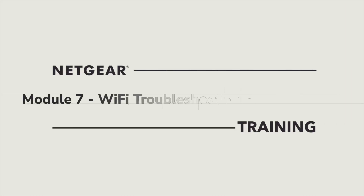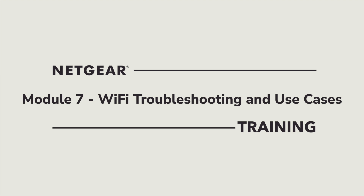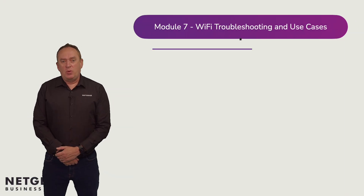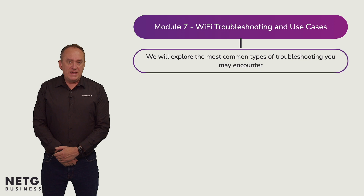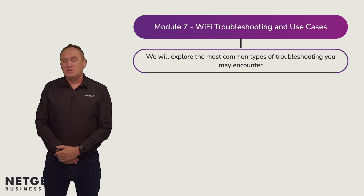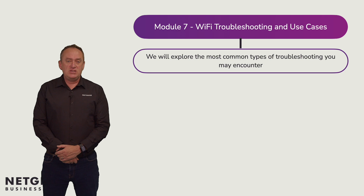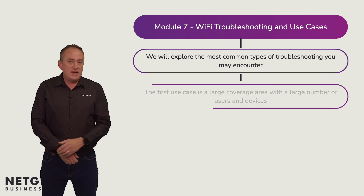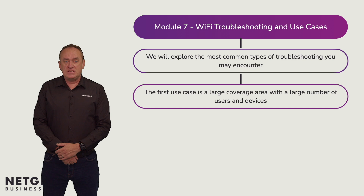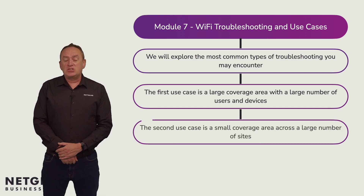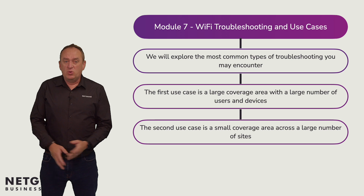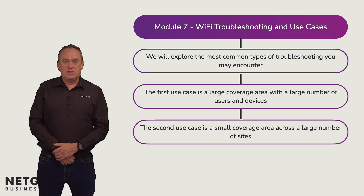Welcome to module seven of the Insight and Pro Wi-Fi training course. In this module we'll explore the most common types of troubleshooting that you may encounter. We'll also be checking out three use cases when Insight is being used to manage the network. The first use case is a large coverage area with a large number of users and devices. The second is a small coverage area across a large number of sites — more locations in a single organisation.